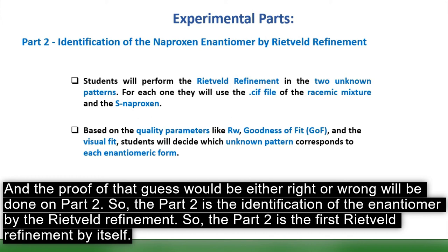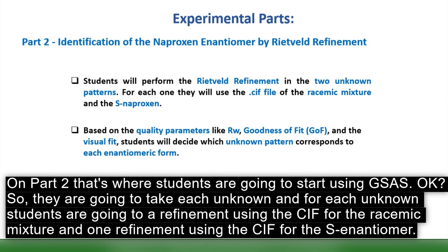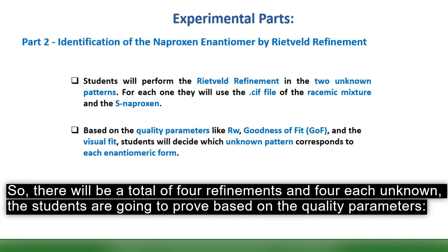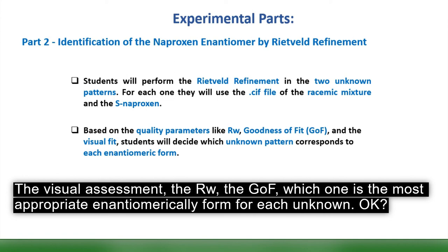Part 2 is the identification of enantiomers by Rietveld refinement. This is where students begin using GSAS-2. For each unknown, students perform one refinement using the CIF file for the racemic mixture and one using the CIF file for the S-enantiomer — four refinements total. Based on the quality parameters (visual assessment, Rwp, and goodness of fit), students identify which enantiomeric form best matches each unknown.